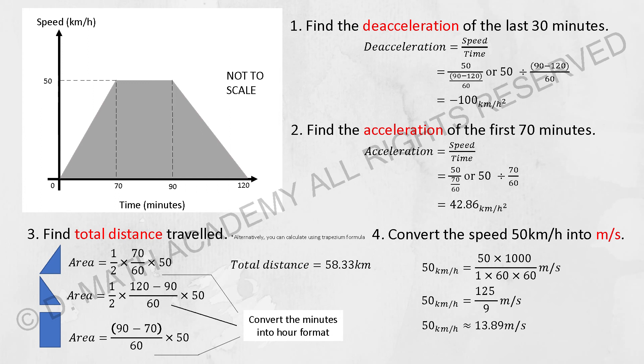Question 2: find the acceleration for the first 70 minutes. Remember to convert the 70 minutes into hours. The acceleration should be 42.86 kilometers per hour squared.